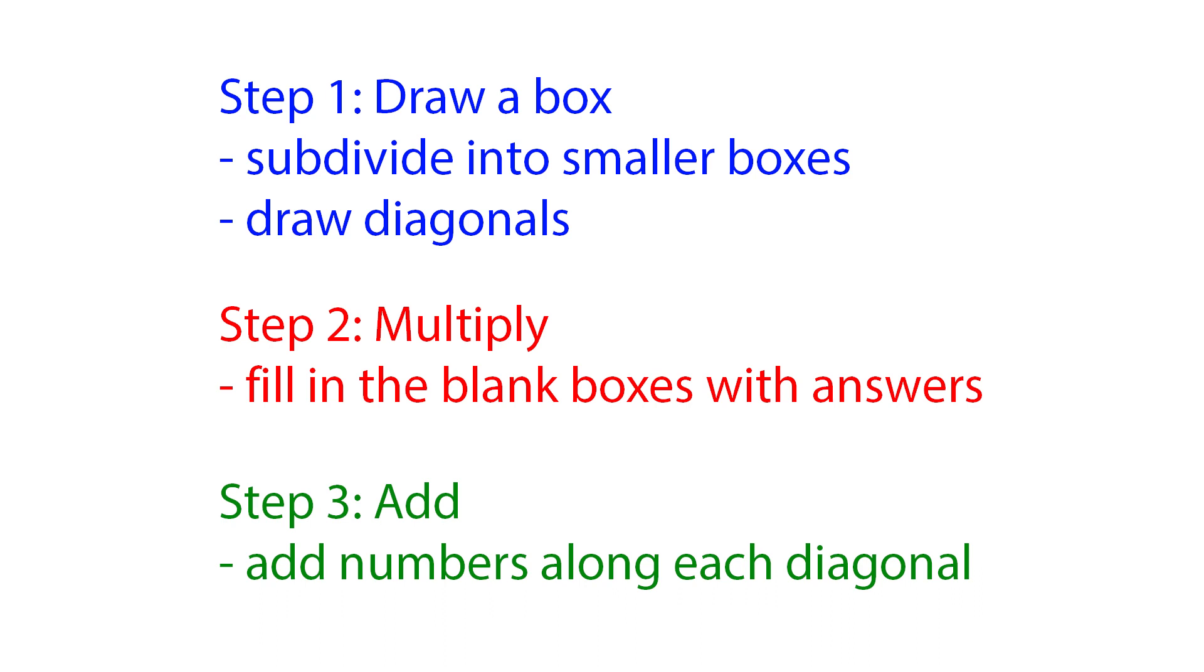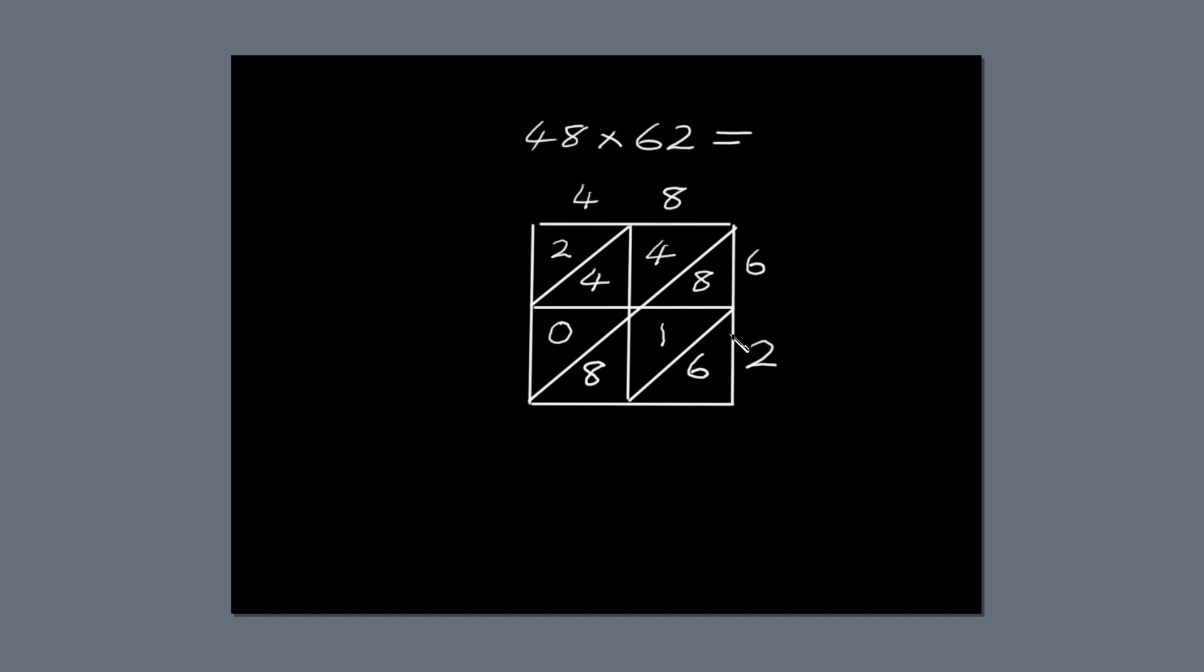Finally, we're going to add up the numbers along the diagonals. I'll circle each diagonal and show you what I mean. The first diagonal only has one number, 6. So write 6 directly below the diagonal.